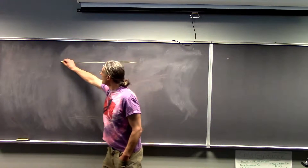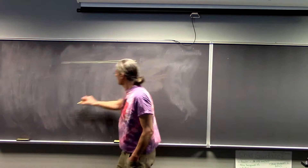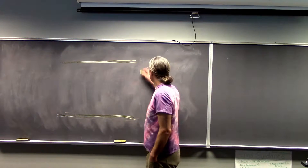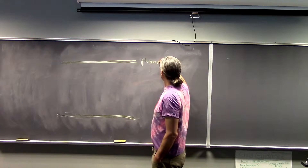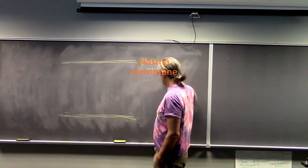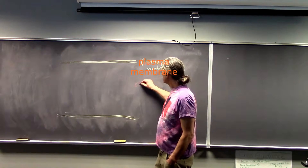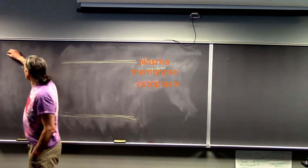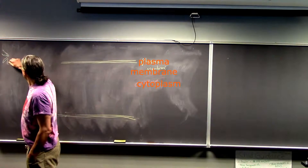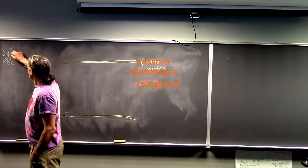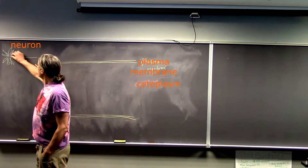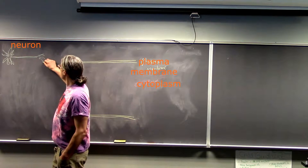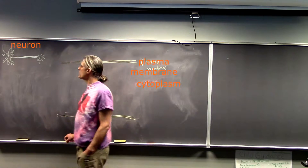This is a representation of a plasma membrane, and that is a plasma membrane, and in the middle here we've got the cytoplasm. Over here, in green this time, we've got the dendrites, looking a little bit less like an arachnid, and the axon, and then the axon terminals.